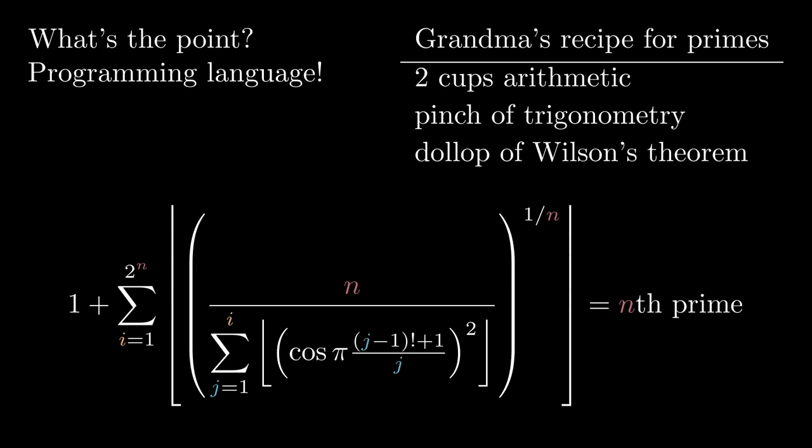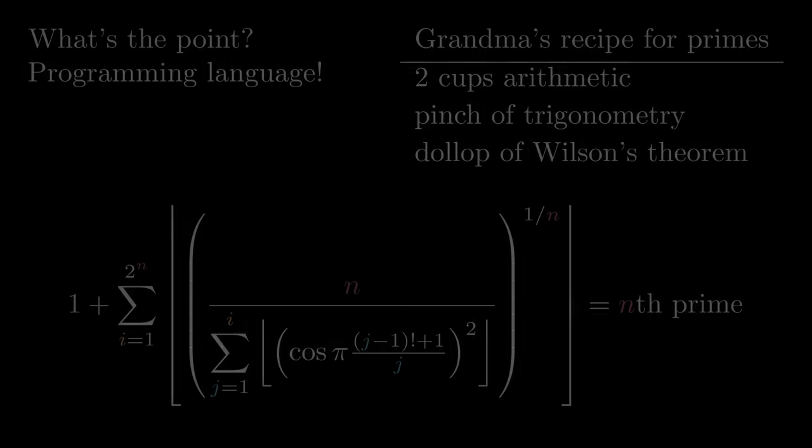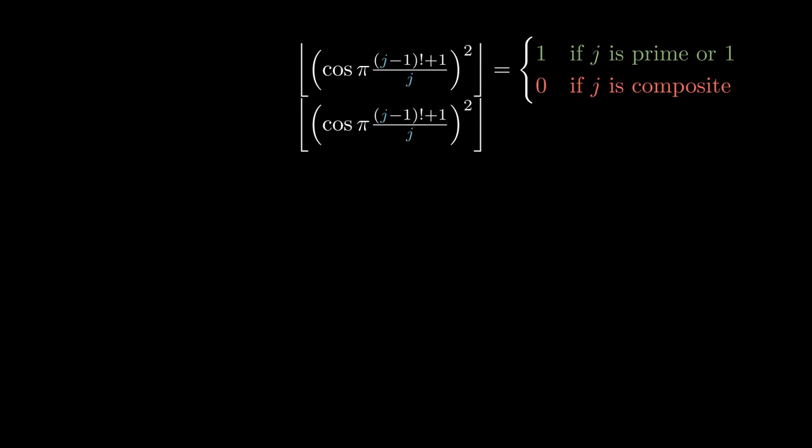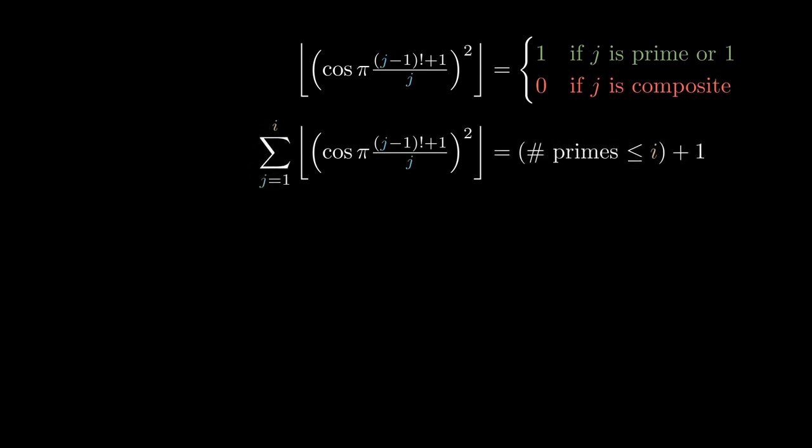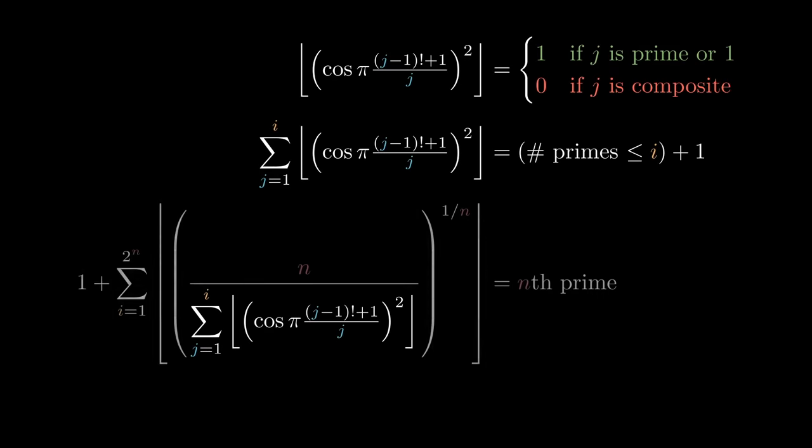It means that a class of functions that doesn't know anything about divisibility or primality is actually quite rich. It can tell when a number j is prime. It can compute the number of primes up through i, and it can compute the nth prime number. And in 1964, you wouldn't expect any of that.